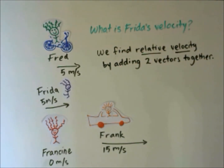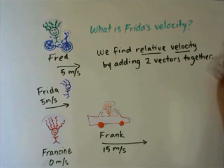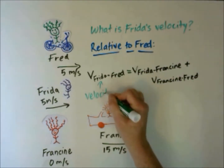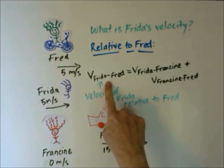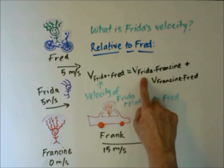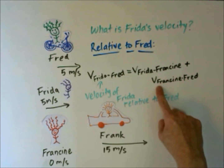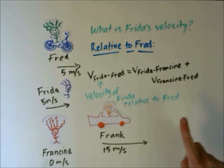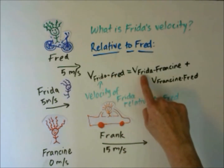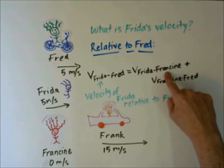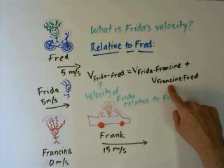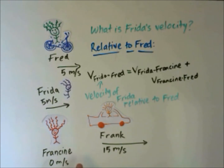We will find the relative velocity for each perspective by adding two vectors together. Let's start with Fred. This is the equation we're going to use: to find the velocity of Frida relative to Fred, we have to find the velocity of Frida relative to Francine, and then the velocity of Francine relative to Fred. To get from Frida to Fred, we go from Frida to Francine and Francine to Fred. You'll notice that the middle — the Francine part — comes at the end of the first velocity and the beginning of the second. This is our stationary frame of reference.